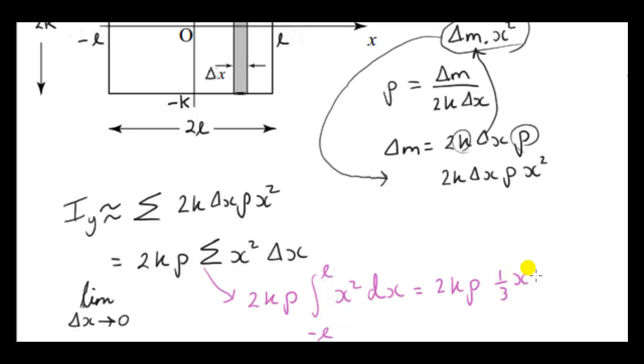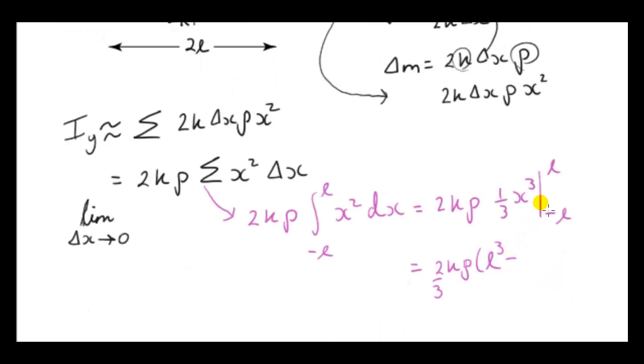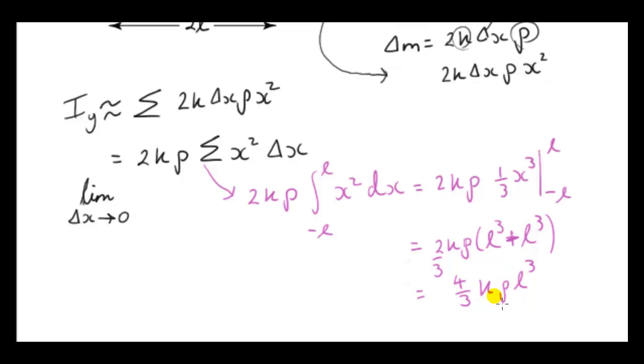This is a straightforward integral. Integrating x squared gives us a third x cubed. If we plug in the upper limit L, we get a third L cubed. And I've pulled out the third here because when we use the lower limit, we're going to get minus a third times minus L cubed. Well, that's just minus L cubed. And these two minuses give us a plus. I'll pull out that third. We have 2L cubed here times two-thirds. That's four-thirds K rho L cubed.